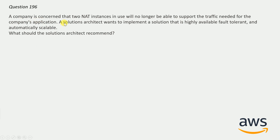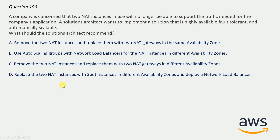Question number 196: A company is concerned that two NAT instances in use will no longer be able to support the traffic needed for the company's application. A solution architect wants to implement a solution that is highly available, fault tolerant and automatically scalable. The correct answer is option C: Remove the NAT instances and replace them with two NAT gateways in different availability zones. NAT gateway is highly available unlike NAT instances, but only within one availability zone. So each individual availability zone should have its own NAT gateway — that is the primary requirement — otherwise it is highly available.